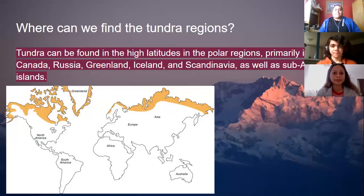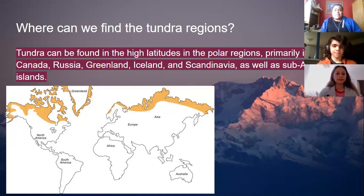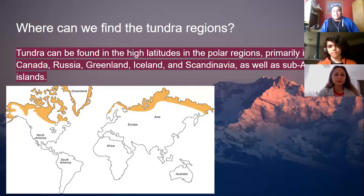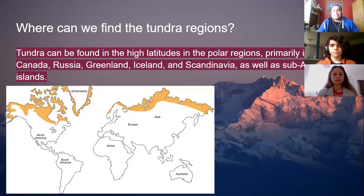So let's start off with our presentation, finding out where we can find Tundra. Tundra can be found in the high latitudes in the polar regions, primarily in Alaska, Canada, Russia, Greenland, Iceland, and Scandinavia, as well as sub-Antarctic islands.